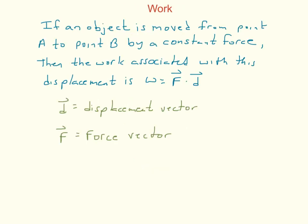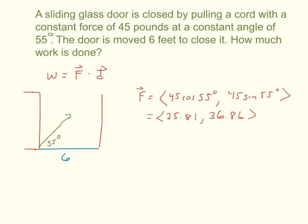Next we deal with work — the application of the dot product. When we talk about work, you're applying a force to an object and moving it from point A to point B. If an object is moved from point A to point B by a constant force, the work associated with this displacement is W equals the force vector dotted with the displacement vector. Notice that W is a scalar — it equals the force vector dot the displacement vector D.